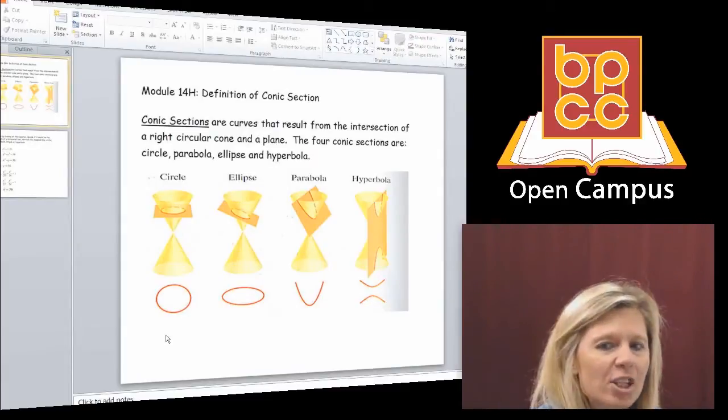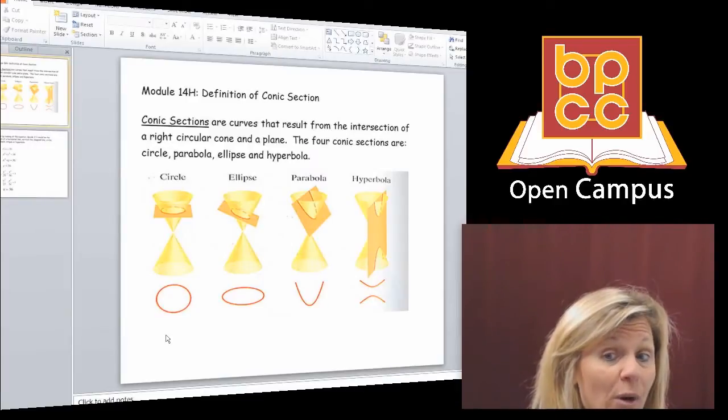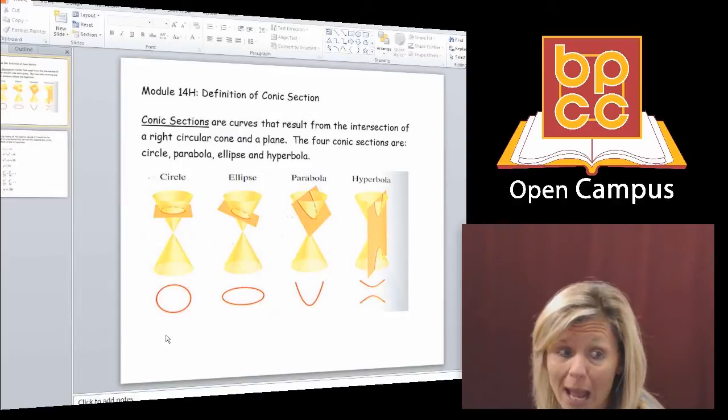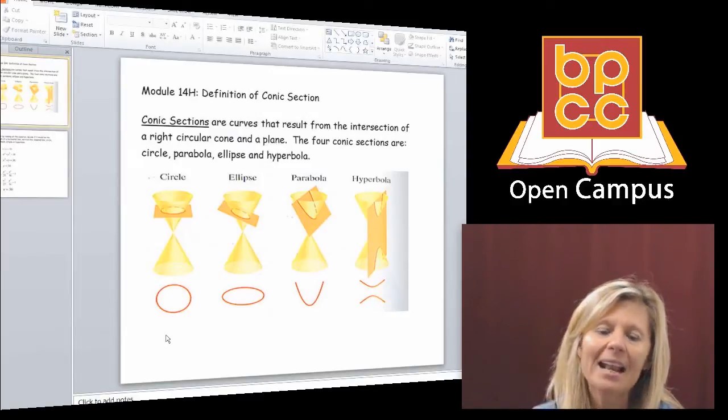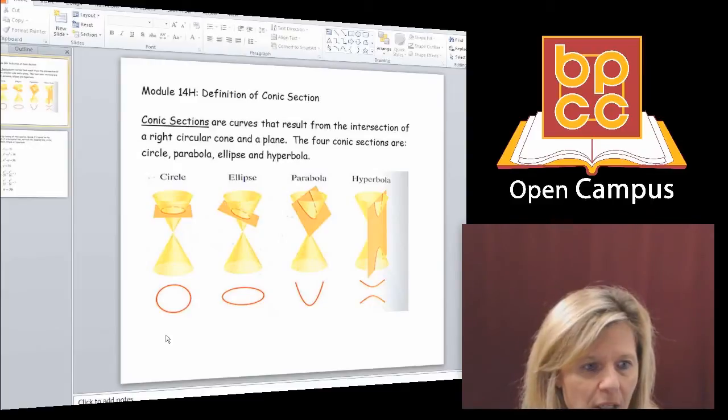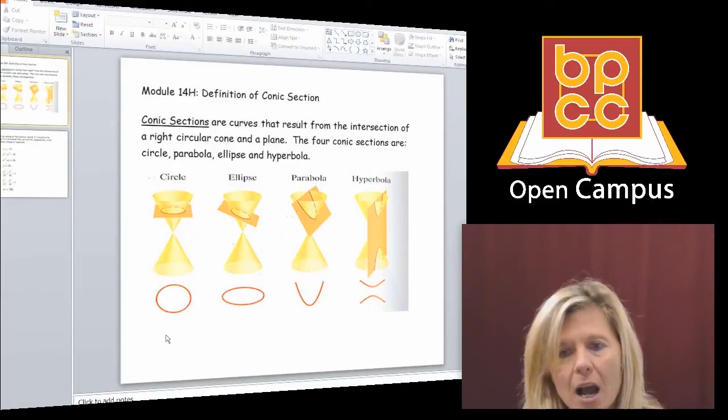If you took an ice cream cone and it started at the center of the ice cream cone and cut it diagonally, you would make or form a parabola. And if you took two ice cream cones and lined them up vertically and cut them straight up and down, you would make a hyperbola.